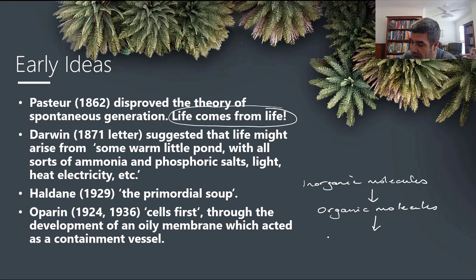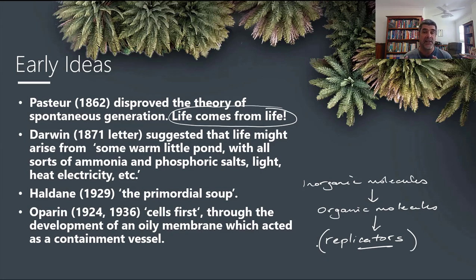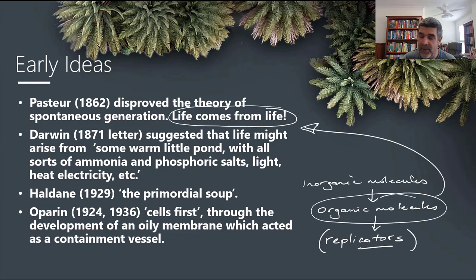Those organic molecules, in turn, give rise to some sort of replicators — something actually capable of self-replication. Even at this level, the chemistry involved is quite complex, and yet there seems to be some evidence to suggest that the early atmosphere may have contained much simpler kinds of substances, compounds and elements. Therefore, we need to talk about how we get to these organic molecules before we get to something capable of replication that we might actually refer to as a form of life.